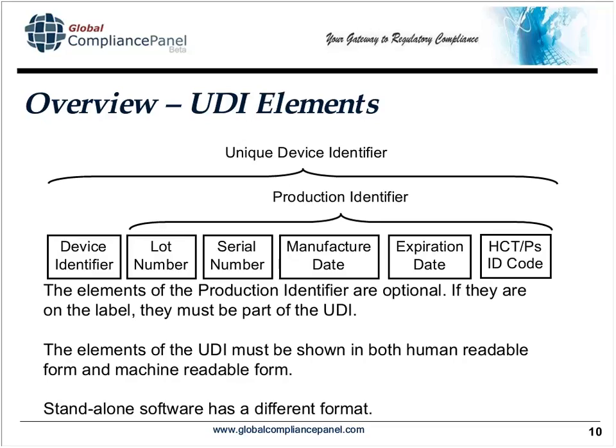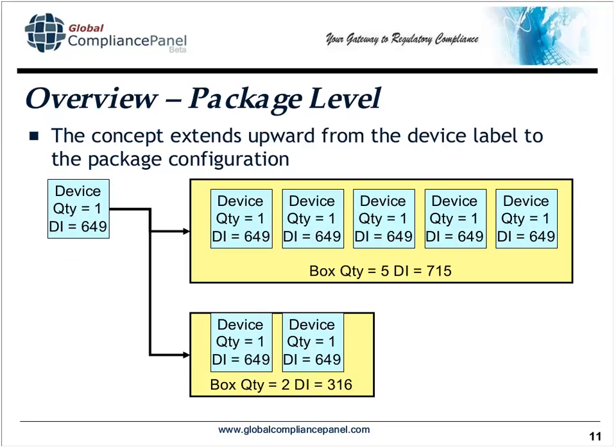For every device identifier — representing a version or model — you'll load the information into FDA's database. This concept extends upward from the device label to the package configuration. If you have a device sold in containers of one, and you also sell them in boxes of five, that box of five has its own device identifier. A box of two would have yet another device identifier. So you'll have many device identifiers associated with a device in all its standard packaging configurations.